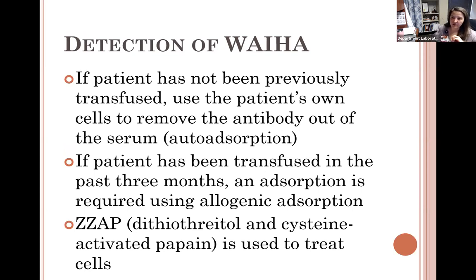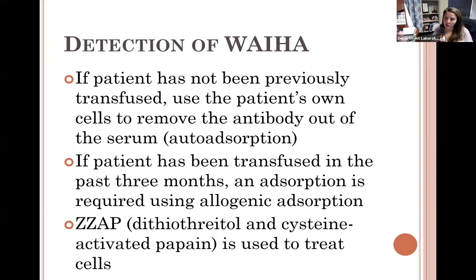There are methods to try to remove the warm auto — called auto adsorption. We try to adsorb out the warm auto to identify underlying alloantibodies. However, if the patient has been transfused within the past three months, auto adsorption cannot be performed. The reason: if the patient was recently transfused, they have donor cells in their circulation. If you try to do auto absorption, those donor cells could absorb out the alloantibody, giving a false interpretation. Always remember — if transfused in the last three months, you cannot do auto absorption.